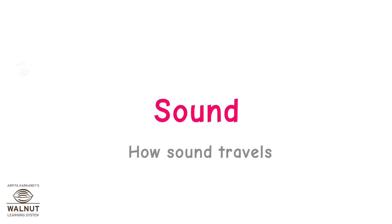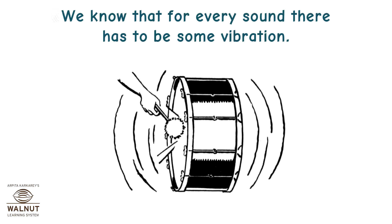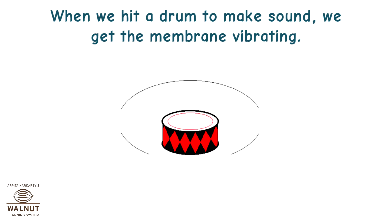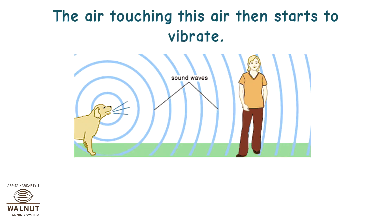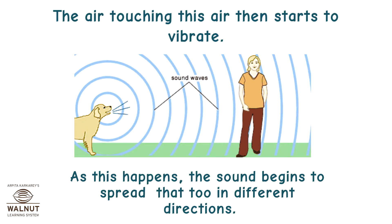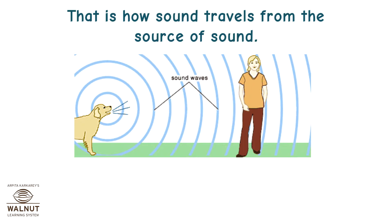Sound — how sound travels. We know that for every sound, there has to be some vibration. When we hit a drum to make sound, we get the membrane vibrating. As the membrane vibrates, the air around it starts vibrating too. The air touching this air then starts to vibrate. As this happens, the sound begins to spread in different directions. That is how sound travels from the source of sound.